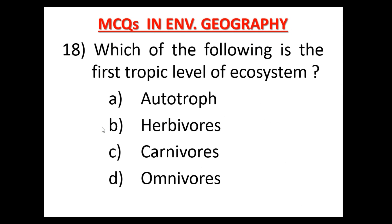Question number 18: Which of the following is the first trophic level of ecosystem? निम्न में से कौन ecosystem का first trophic level है? Option A: Autotroph, Option B: Herbivorous, Option C: Carnivores, Option D: Omnivores. Autotroph is the first trophic level of ecosystem. Option A is the correct answer.